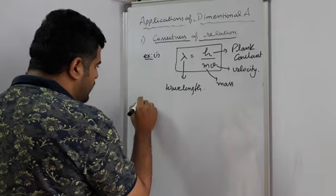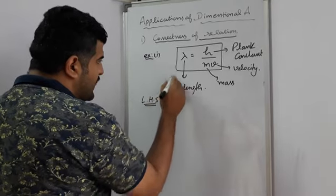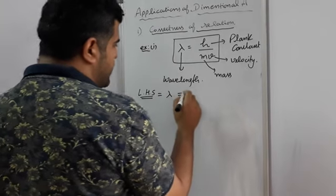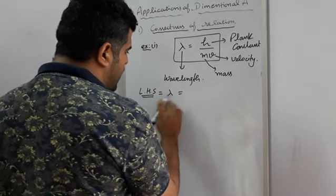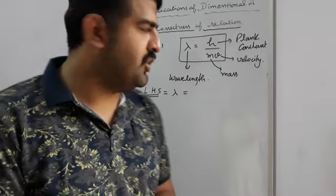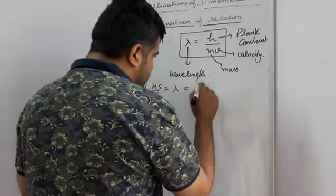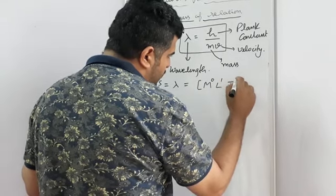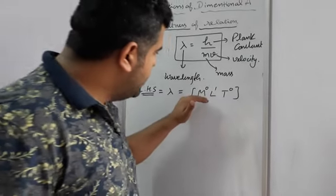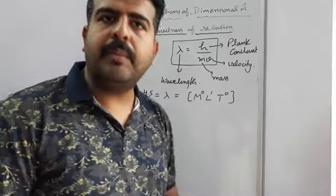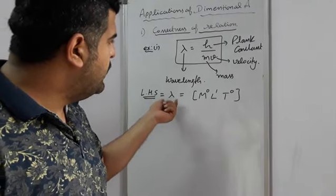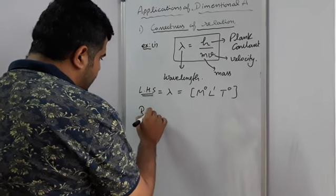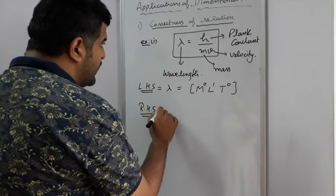First we will deal with the left hand side. On the left hand side there is only one term, λ. Lambda is wavelength and its unit is meter, so its dimensional formula is M⁰L¹T⁰, because there is no mass or time term involved since lambda is a wavelength measured in meters.